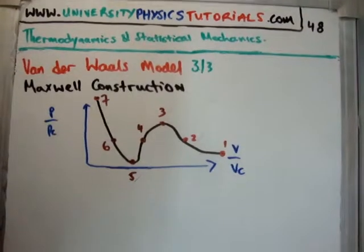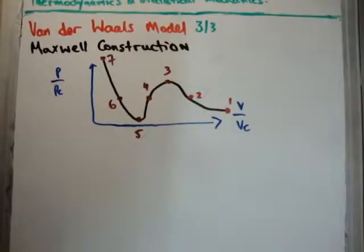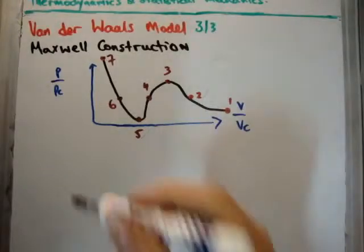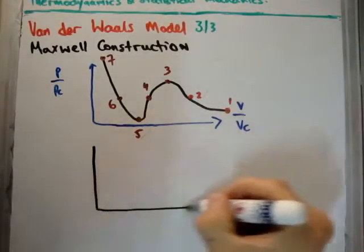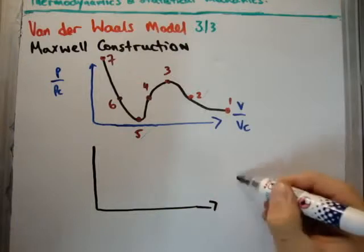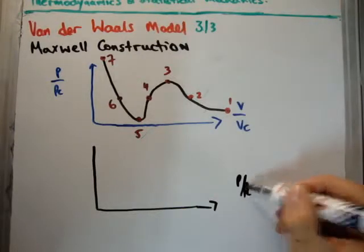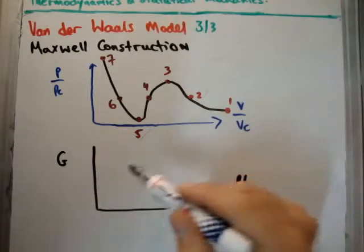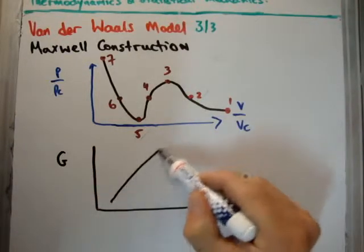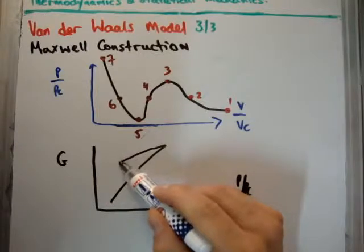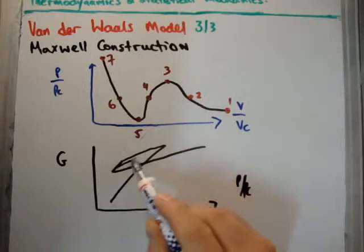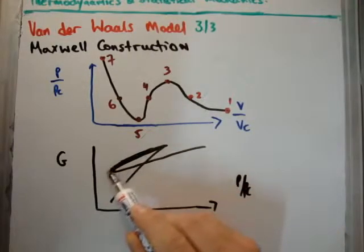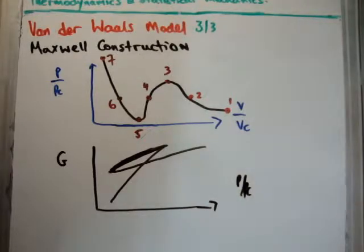Now if we, at the same time, plot the Gibbs free energy, you're just going to have to believe me that this is what it looks like. So if I plot the p over p critical, notice by the way I've gone from volume to pressure, but here we have the Gibbs free energy. It should look something like this. That's supposed to be a straight line, believe it or not.